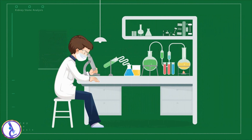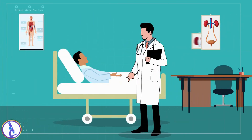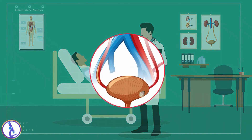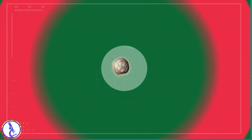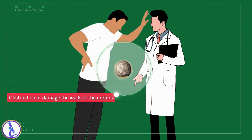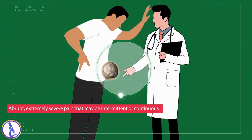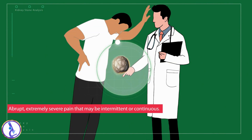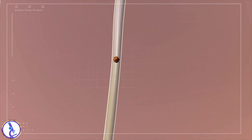Kidney stones are small hard masses that form within the kidneys and cause problems either because they grow large enough to obstruct urine flow, or because they become dislodged and begin to travel from a kidney through the ureter. They can cause temporary obstruction but also stretch, irritate, or damage the walls of the ureters. This movement can cause abrupt, extremely severe pain that may be intermittent or continuous.